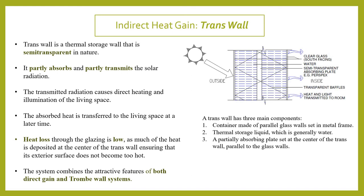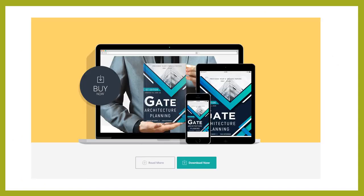The transe wall partly absorbs and partly radiates heat. Heat loss through glazing is low because much of the heat is deposited at the transfer interface — the exterior does not become too hot. Because the heat is transferred through multiple layers, no single component of the wall becomes extremely hot. The basic components are: a container made of parallel glass walls in a metal frame, a thermal storage liquid (generally water), and a partially absorbing perspex plate set at the center to transmit heat from exterior to interior.